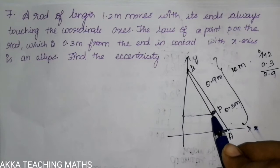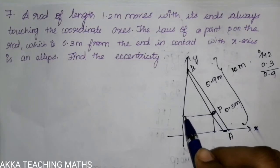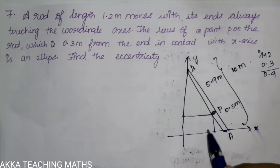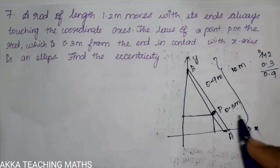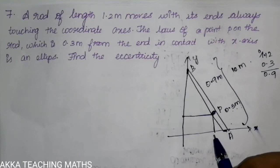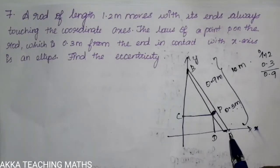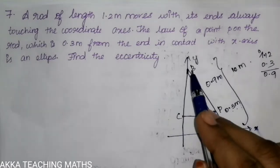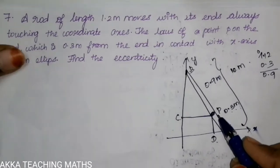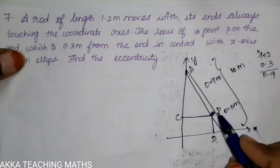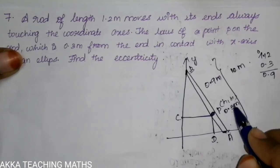We draw lines from point P parallel to the x-axis and y-axis, meeting the axes at points D and C respectively. To get the locus of point P, we let the coordinates of P be (h, k), which will be replaced by x and y.